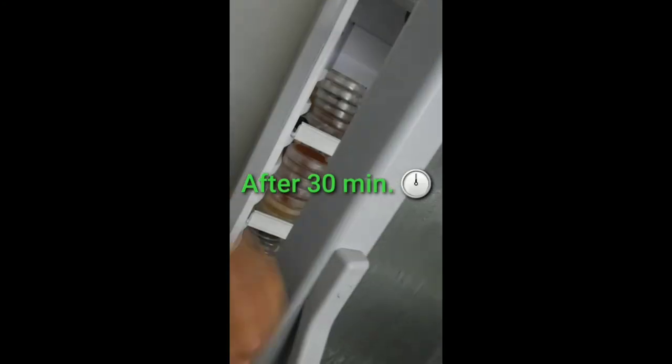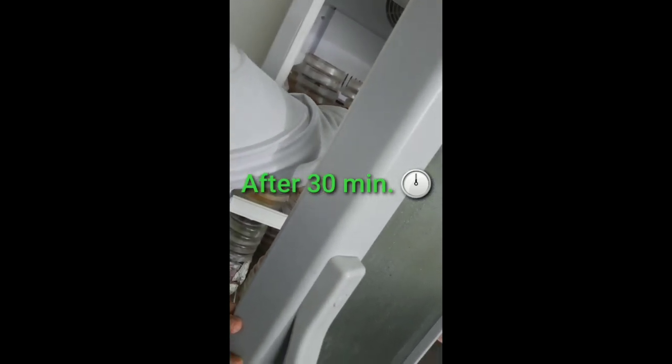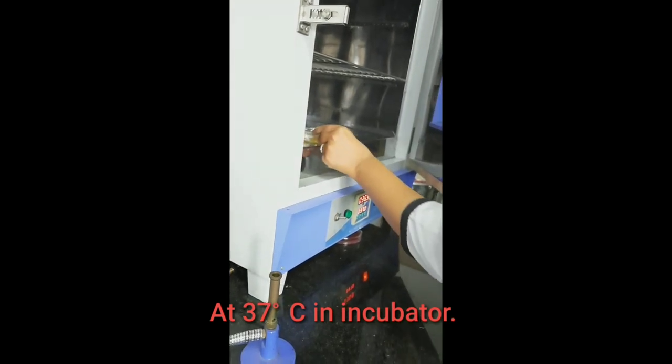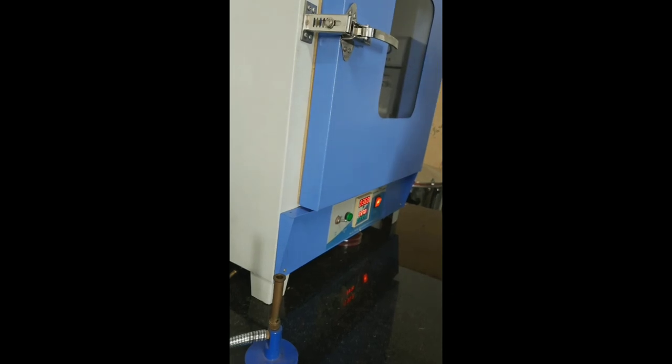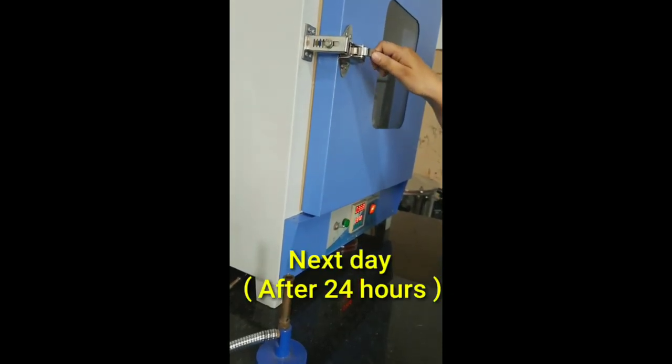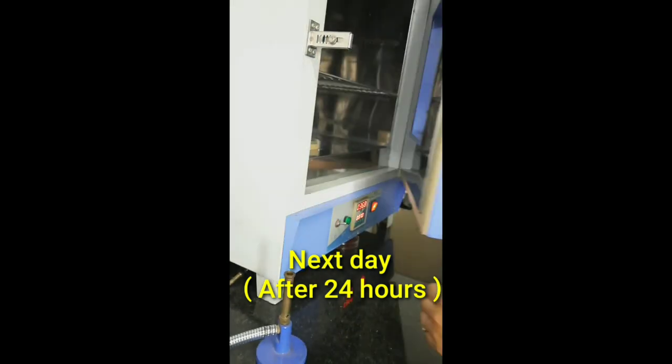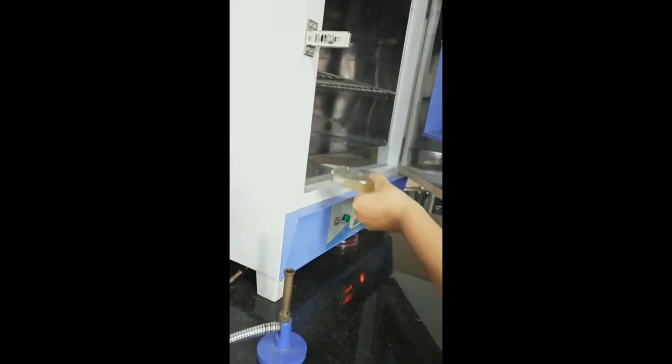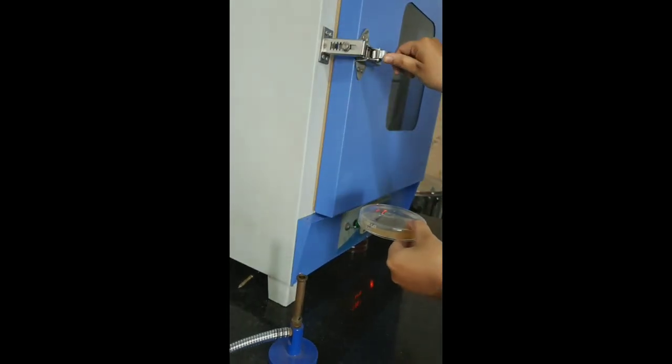After 30 minutes, we have to take it out and place it in the incubator without disturbing. In the right position we have to place it in the incubator at 37 degrees Celsius for 24 hours. On the next day, we have to take out our plate and observe the zone of inhibition.